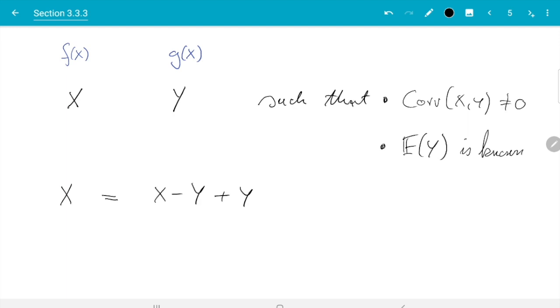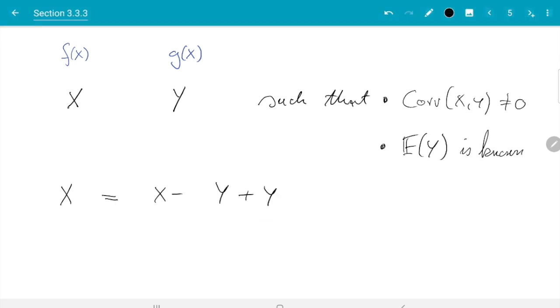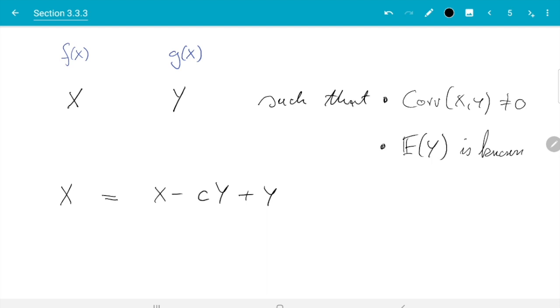And for more generality what we can do is we can even have some constant here. So we can write minus constant times y plus constant times y where we are going to choose c later. And then what we get is the expectation of x is an expectation of x minus c y plus c times the expectation of y.